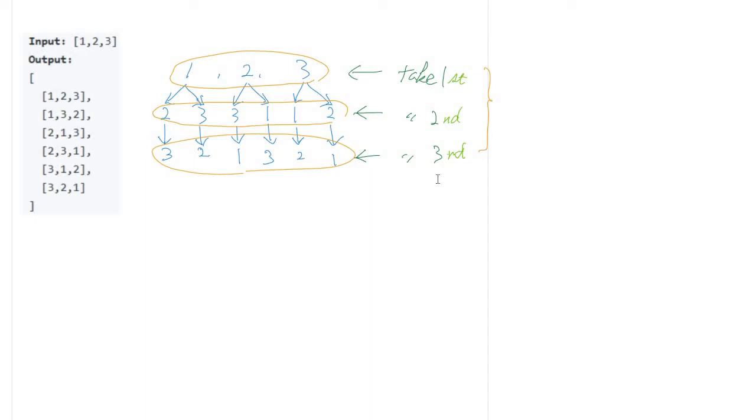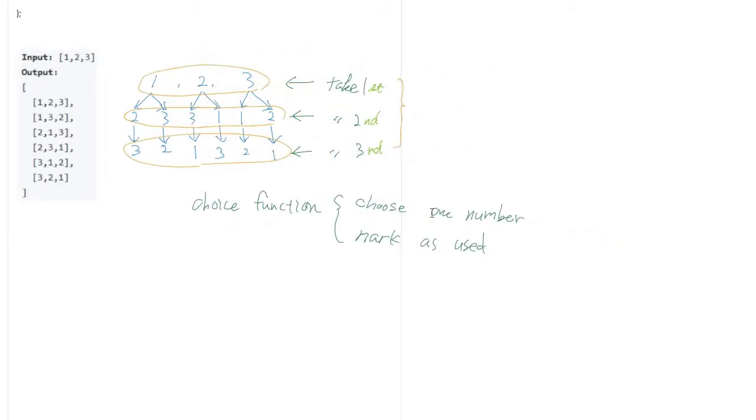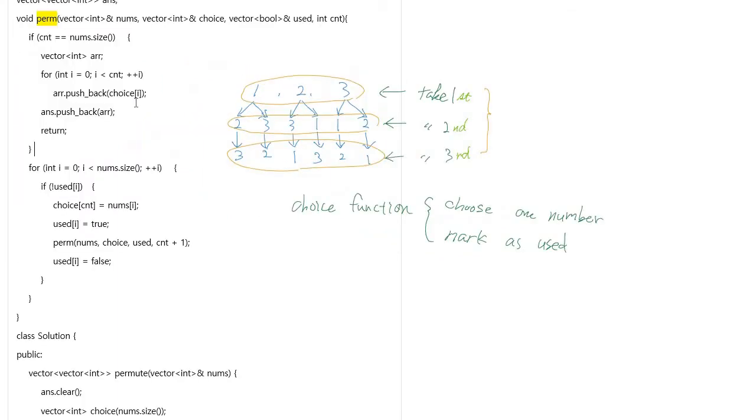With this rule, we can implement a choice function to choose one number, and then the chosen number should be marked as used because it should not be used again. That's the key point. Let's see the code. I implemented a